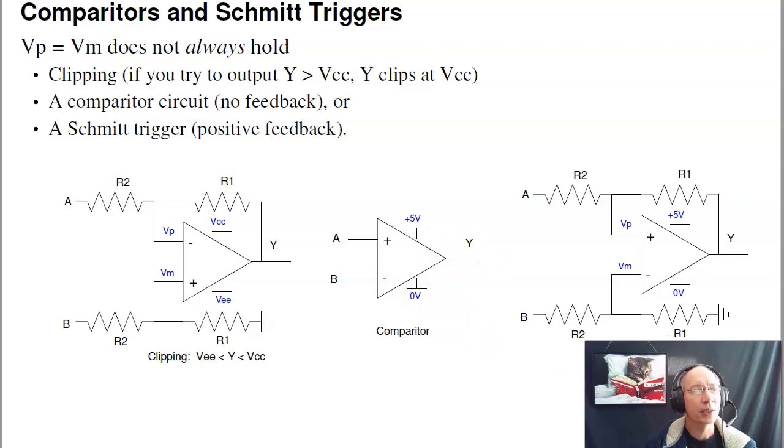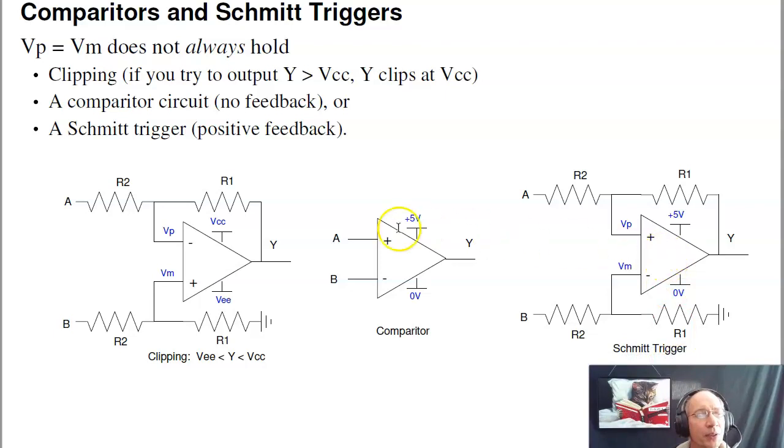The third case will be a Schmitt Trigger. A Schmitt Trigger is very similar to an instrumentation amplifier, except that with a Schmitt Trigger, I have positive feedback. Positive feedback is unstable, and what that does is it forces the output to slam high to 5 volts, or slam low to 0 volts.